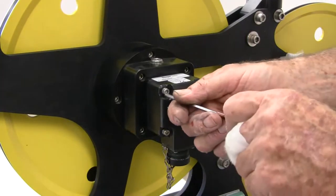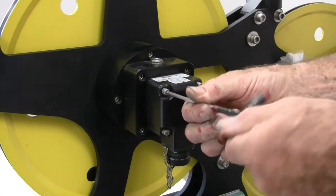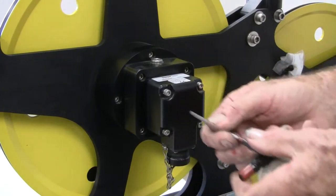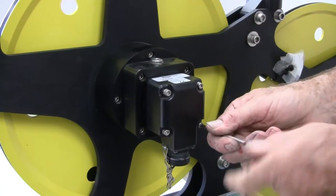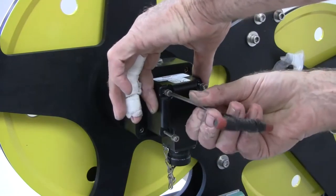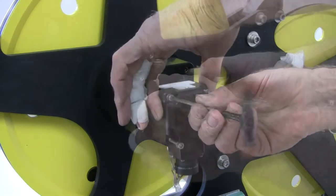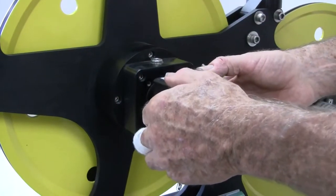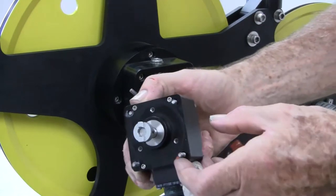We will now remove the encoder. Remove the four screws holding the encoder to the adapter. Hold on to the encoder as you remove the last screw to make sure that it does not fall and get damaged. Pull the encoder straight out making sure not to jar the coupling.